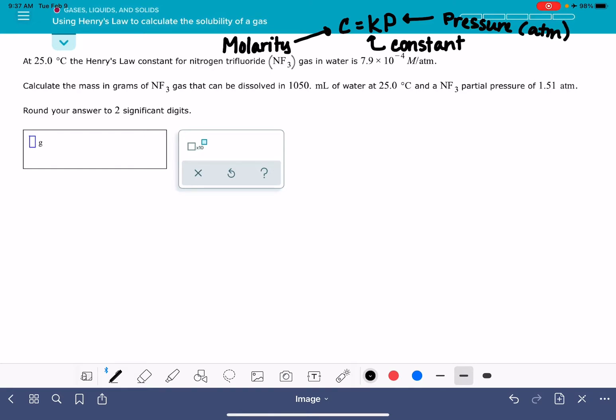In this particular problem, we are being asked to calculate the mass in grams of NF3 that could be dissolved in a certain amount of solution if there is a partial pressure of 1.51 atmospheres, and we are being given the value of the constant K.